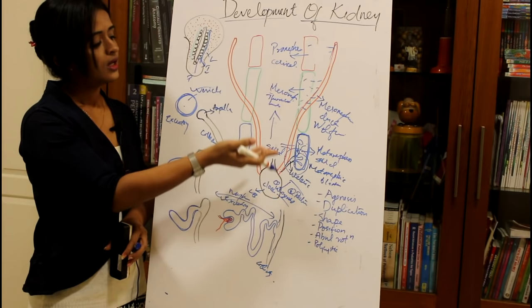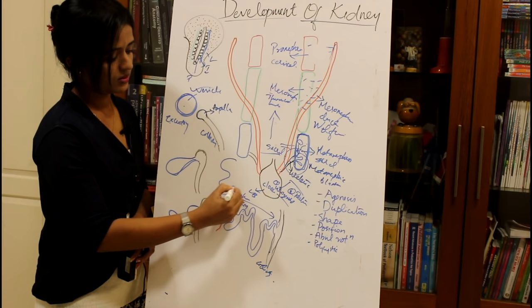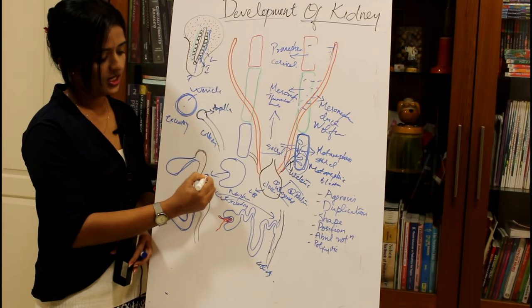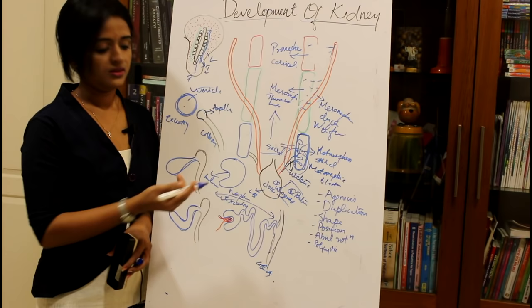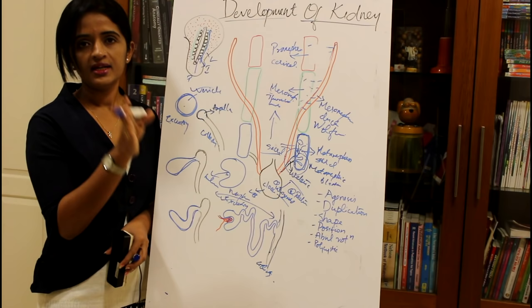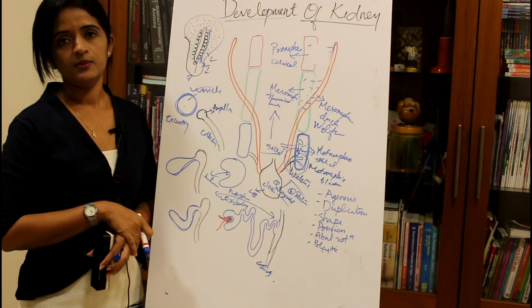The kidney is shaped like a bean, and the hilum faces medially in adults. However, during development the hilum faces anteriorly, and it is by rotation that the anteriorly-facing hilum comes to face medially.